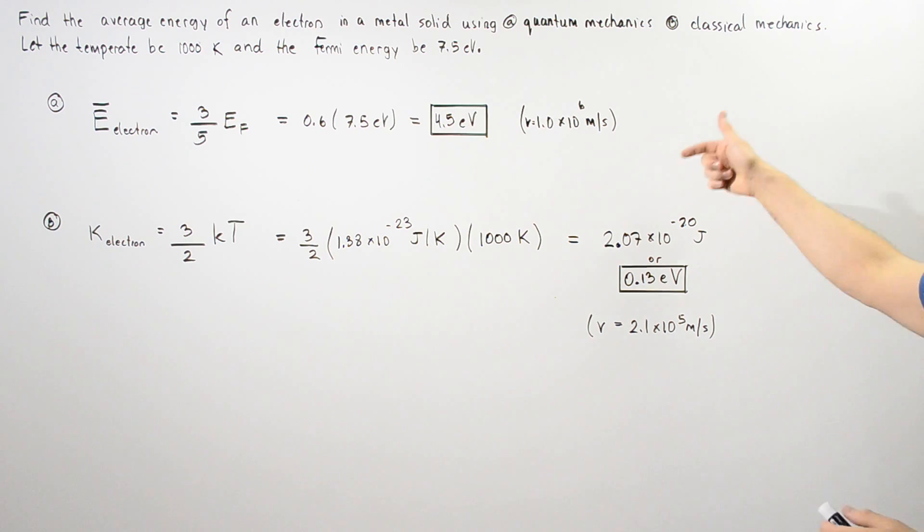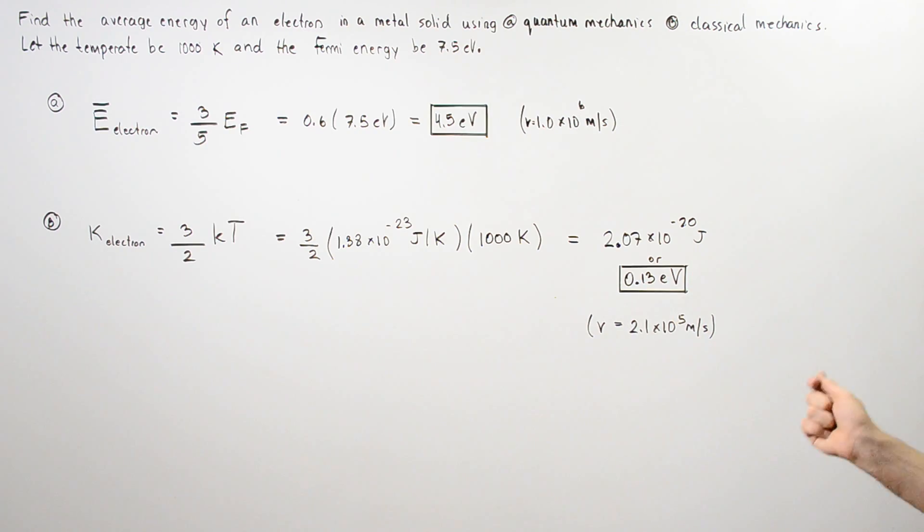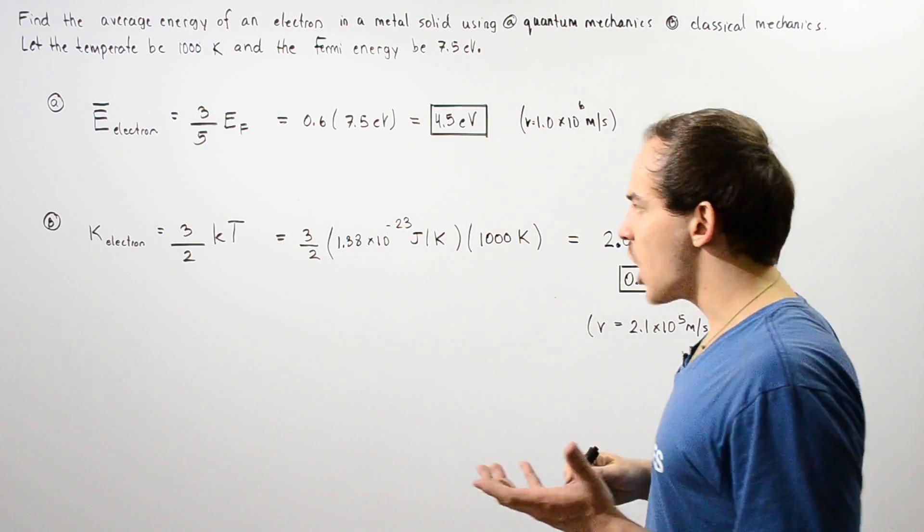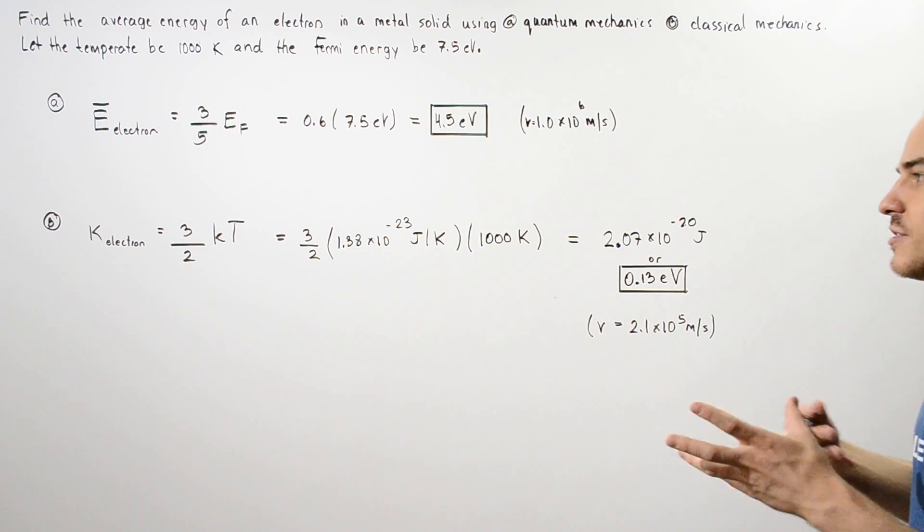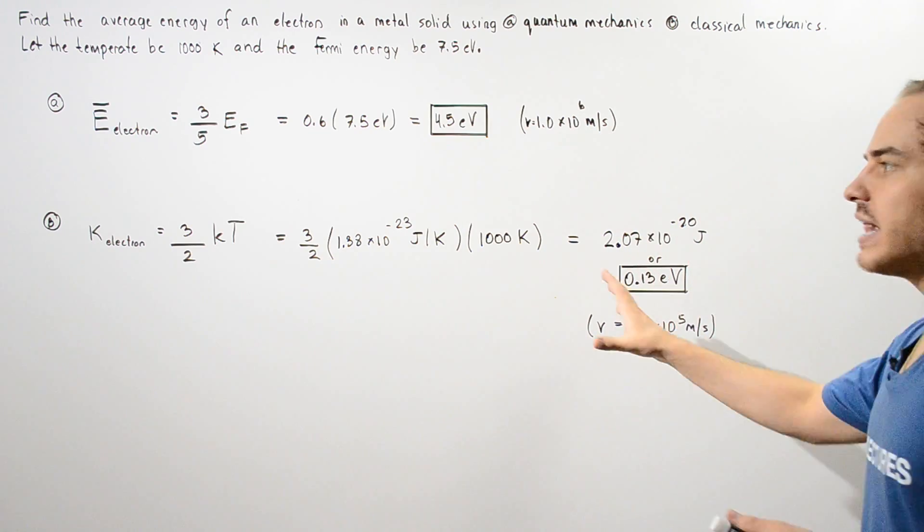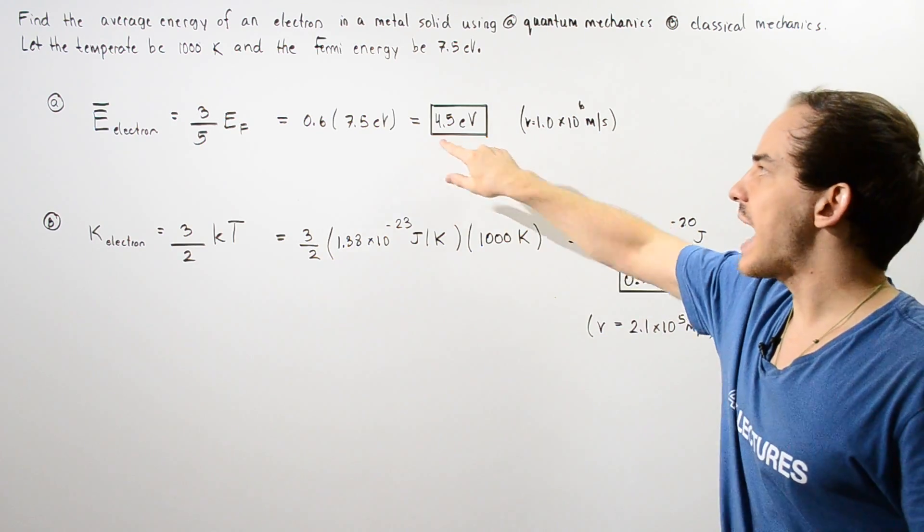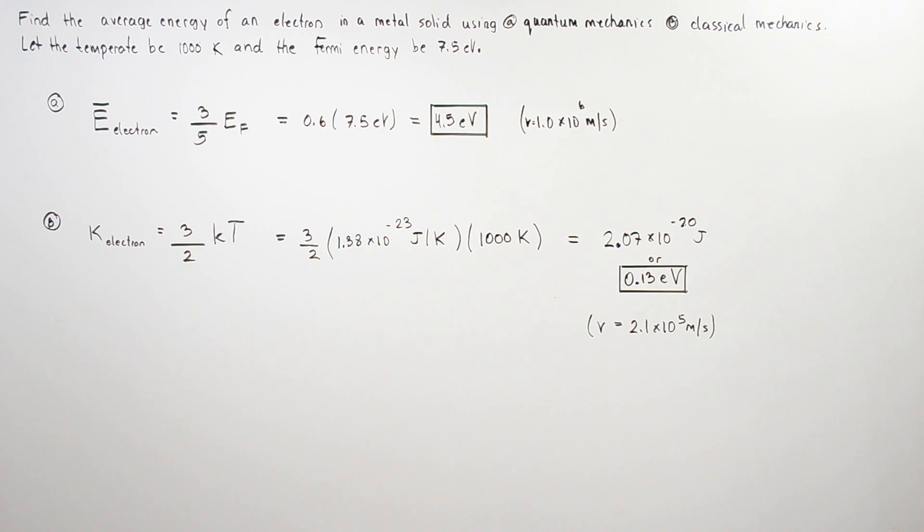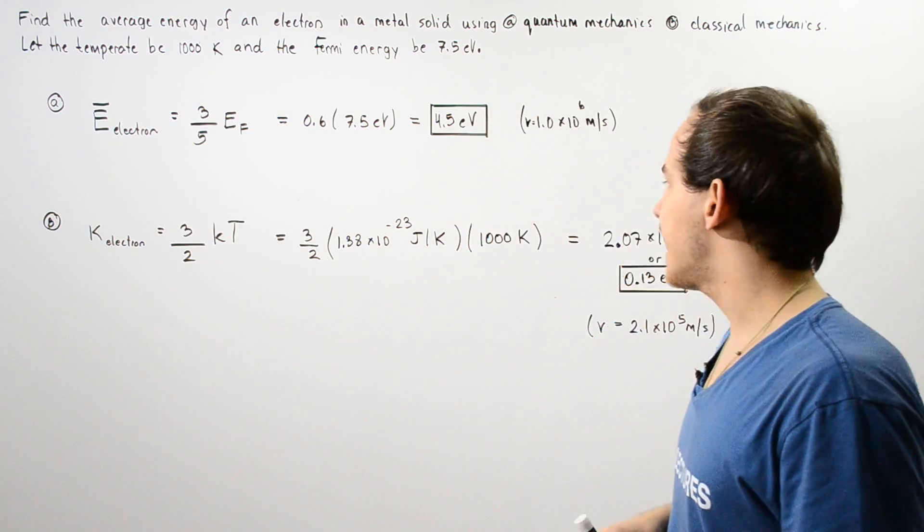We get about 2.07×10^-20 joules, or equivalently 0.13 electron volts. So we see that even at a high temperature, there is a very large error when we use classical mechanics. We get this quantity versus the actual value of about 4.5 electron volts if we use quantum mechanics.